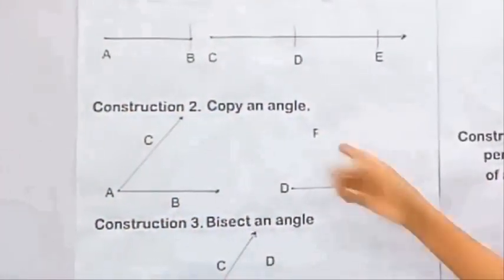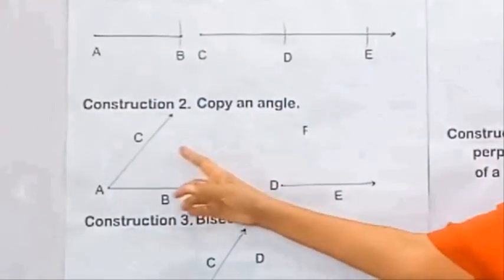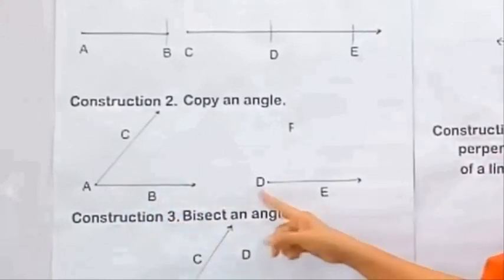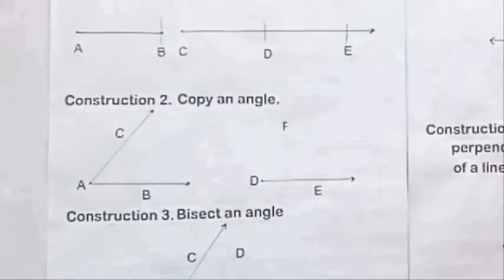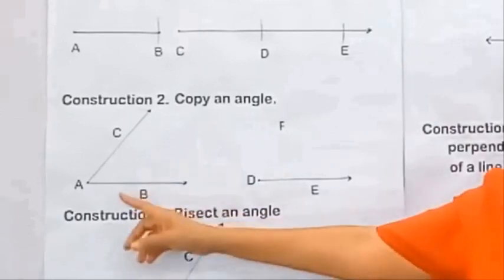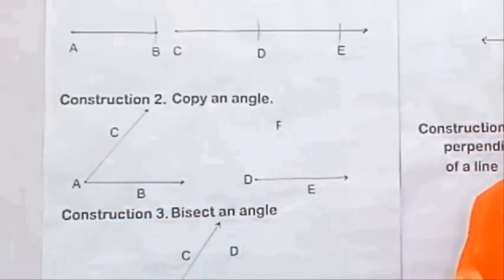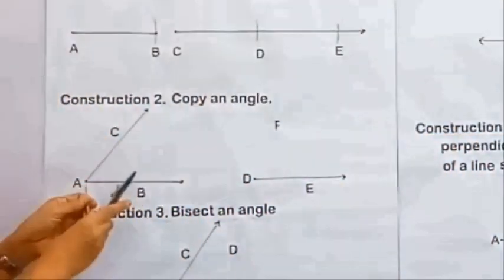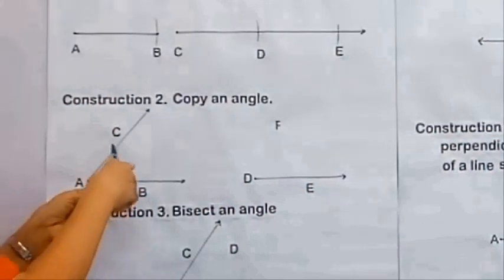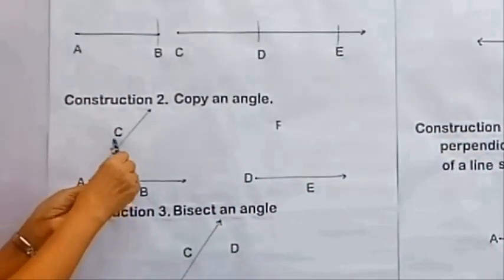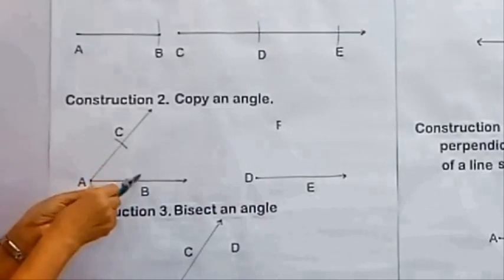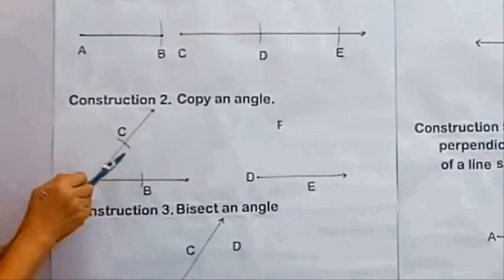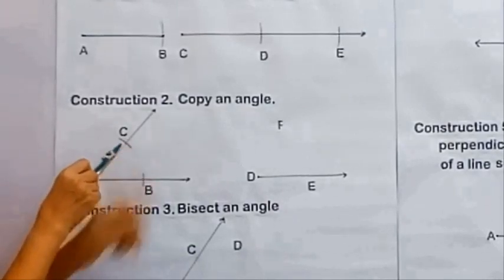The second construction is to copy an angle. To copy angle CAB, we start by making a ray DE and then measure a convenient arc from point A. From point A, we swing an arc intersecting both sides of the angle at point B and point C.